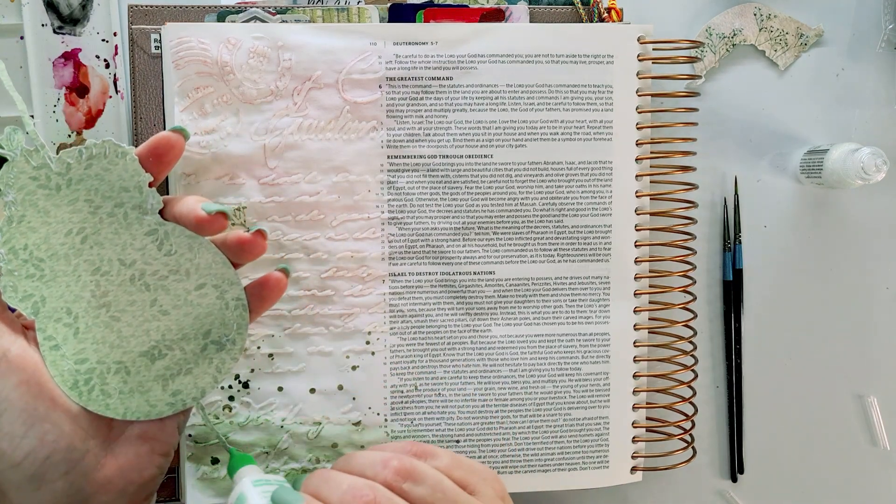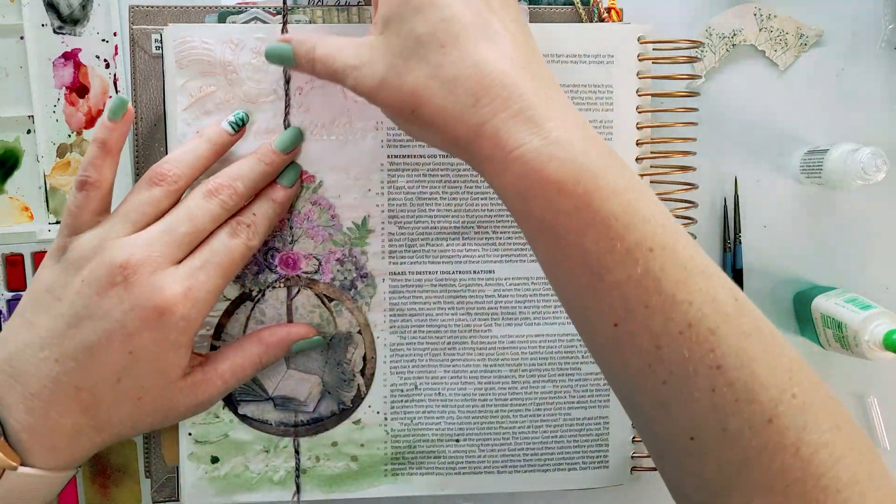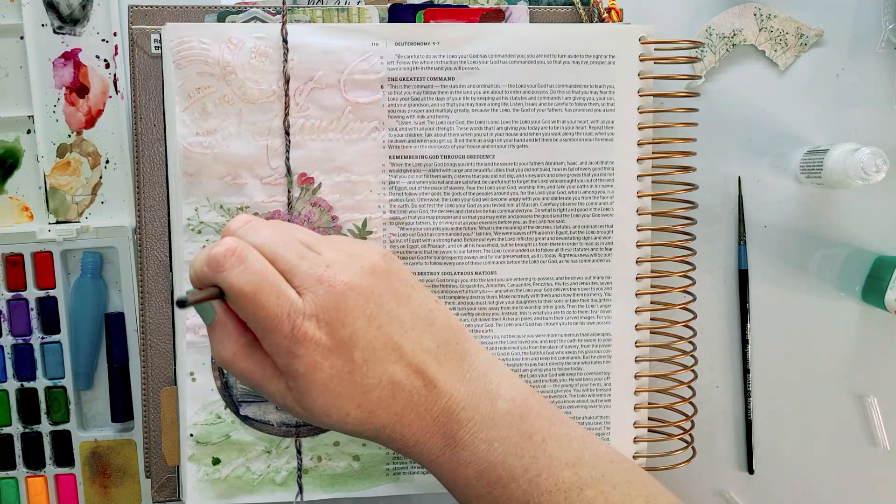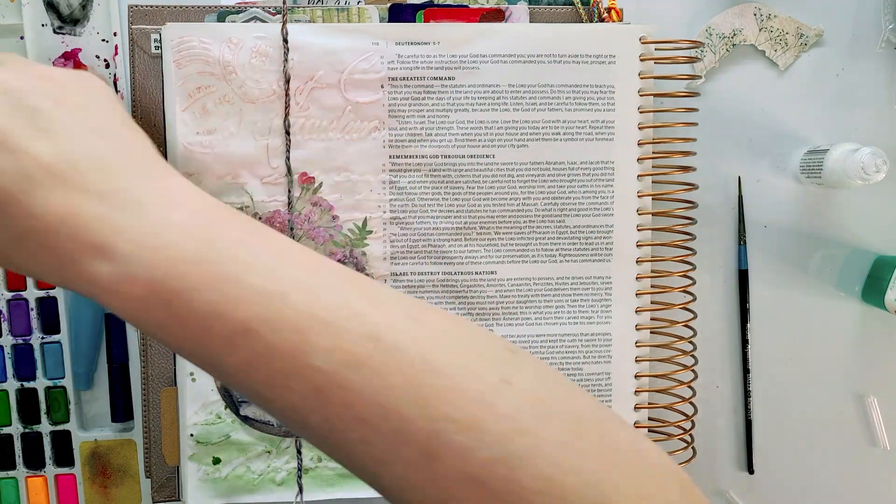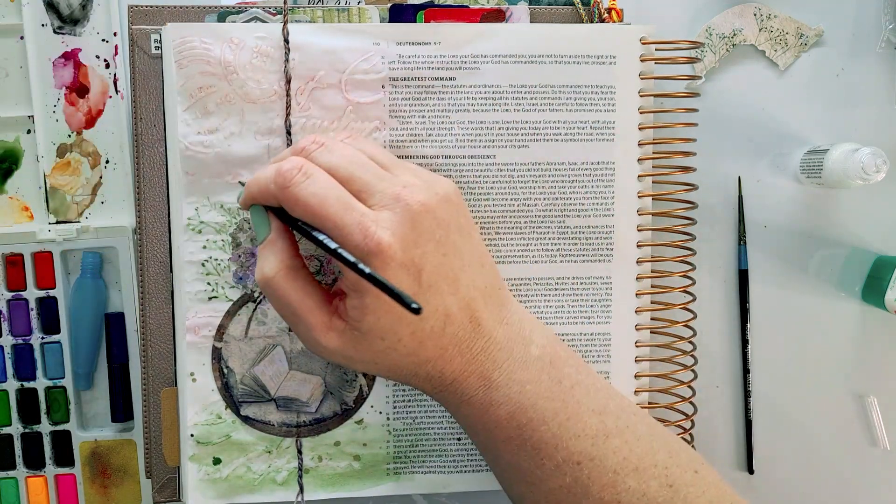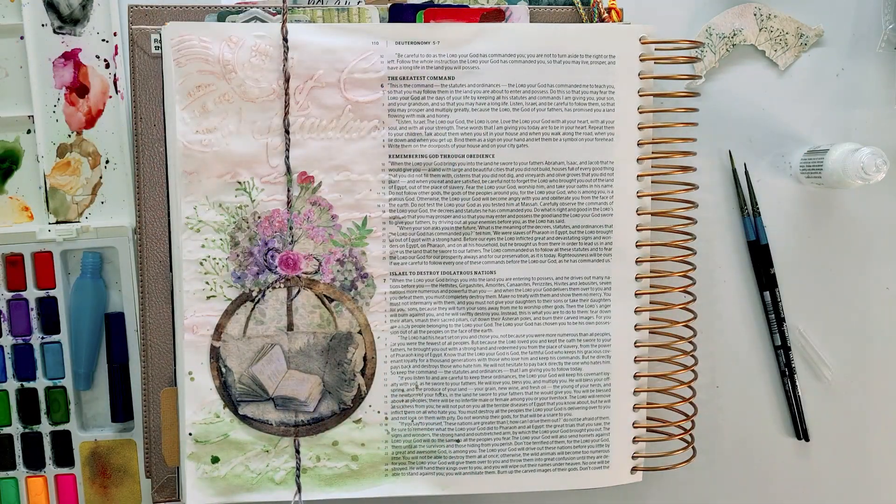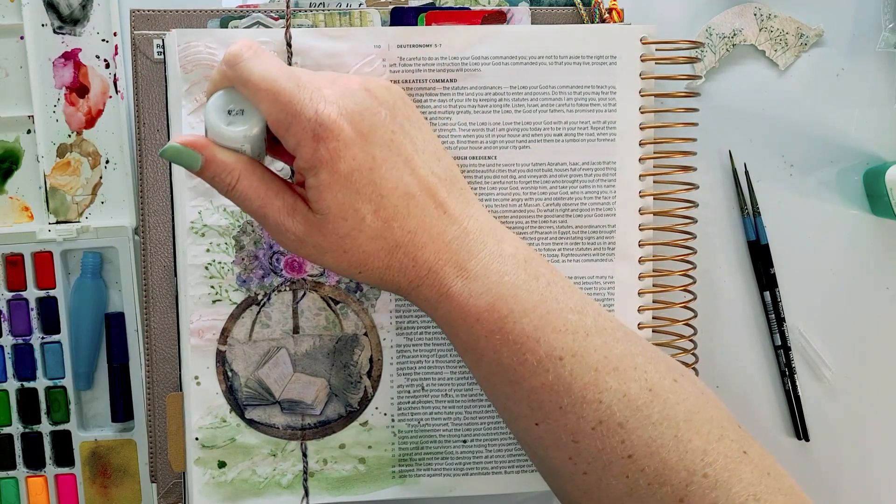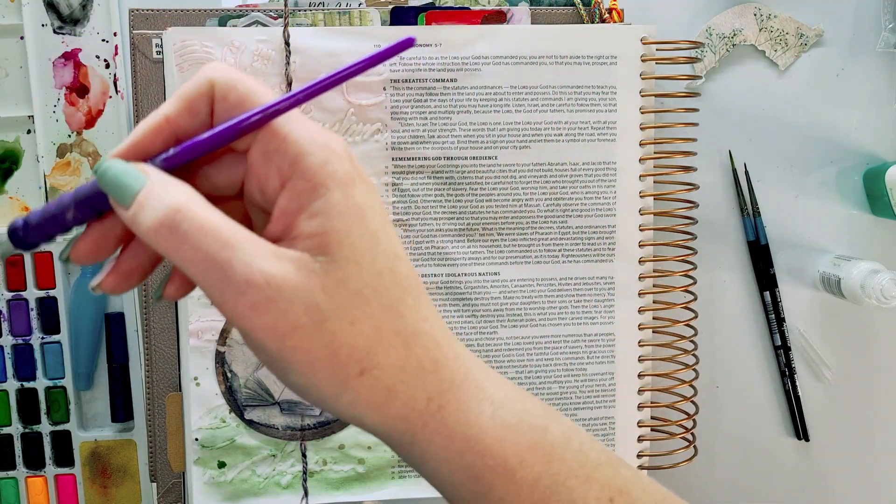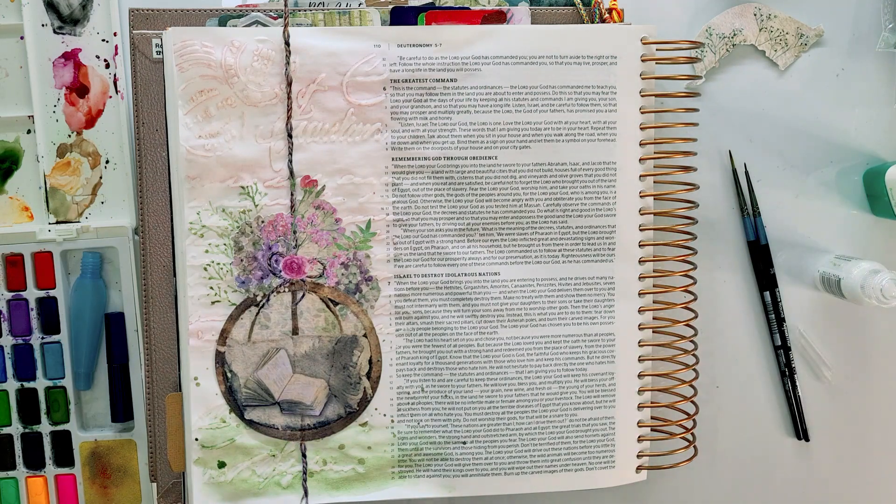Working in Deuteronomy 6, verse 5 to 9. It says the following: Listen Israel, the Lord our God, the Lord is one. Love the Lord your God with all your heart, with all your soul, and with all your strength. These words that I'm giving you today are to be in your heart. Repeat them to your children. Talk about them when you sit in your house and when you walk along the road, when you lie down and when you get up. Bind them as a sign on your hand and let them be a symbol on your forehead. Write them on the doorposts of your house and on your city gates.